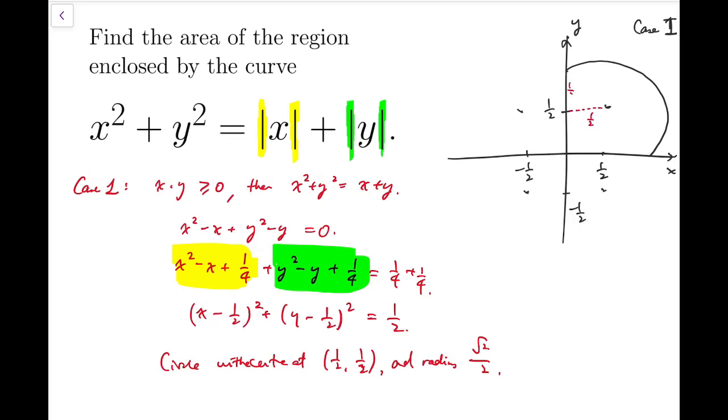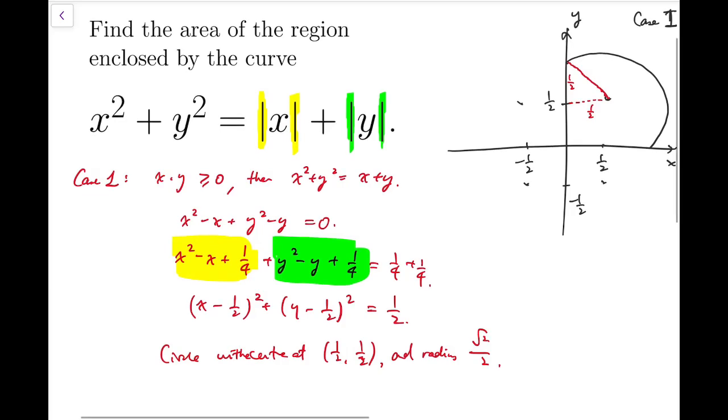and this is a half. So the radius here is root 2 over 2, and we can do the same for the other side. So basically we actually have some sort of a semicircle at quadrant 1. And the intersecting points, the meeting points, x-point intercepts, are 1, 0, and 0, 1. So that's the first case.